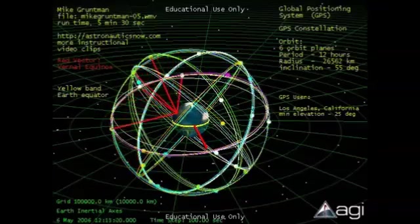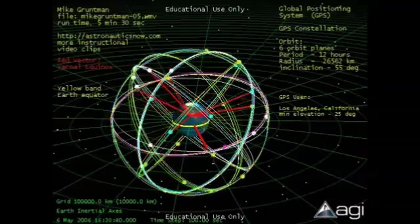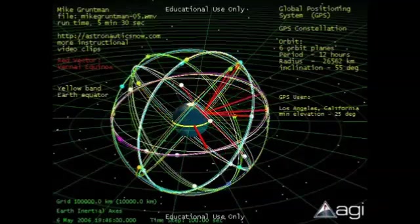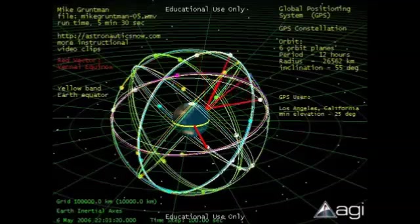In other words, the orbits have different right ascensions of ascending nodes. The GPS ground control segment maintains the points of equator crossing within two degrees from the nominal values.